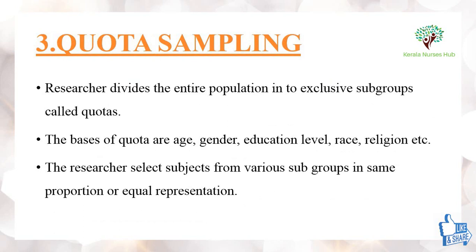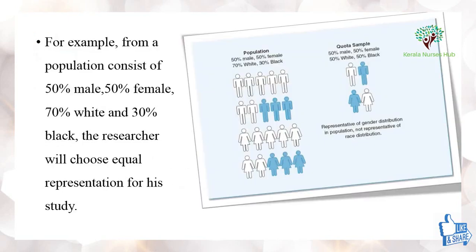The third method is quota sampling. The researcher divides the entire population into exclusive subgroups called quotas. The basis of the quota can be age, gender, educational level, race, religion, etc. The researcher then selects subjects from various subgroups in the same proportion or equal representation.